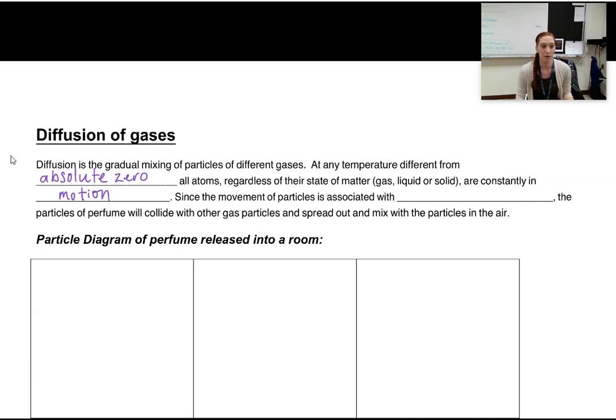Since the movement of particles is associated with the physical state, that's solid, liquid, or gas, the particles of perfume will collide with other gas particles and spread out and mix with the particles in the air. So this is what you saw in the simulation. If we were in a physical space, you could do this with perfume or Febreze or something like that. But in the simulation, you saw these smelly particles, a variety of different things. I think it starts out with vanilla and fish, and you see those particles released into the room until they ultimately get to the person who's going to detect them with their sense of smell from their nose.